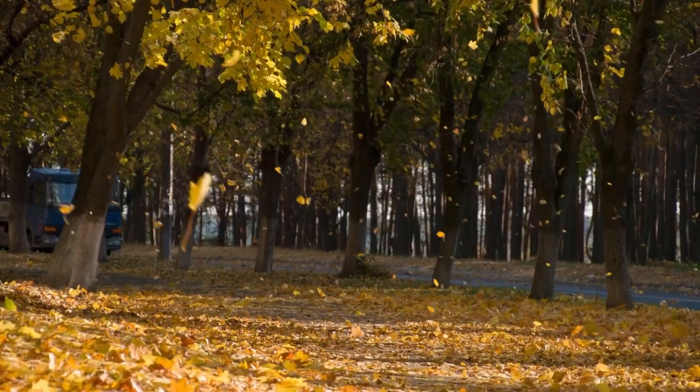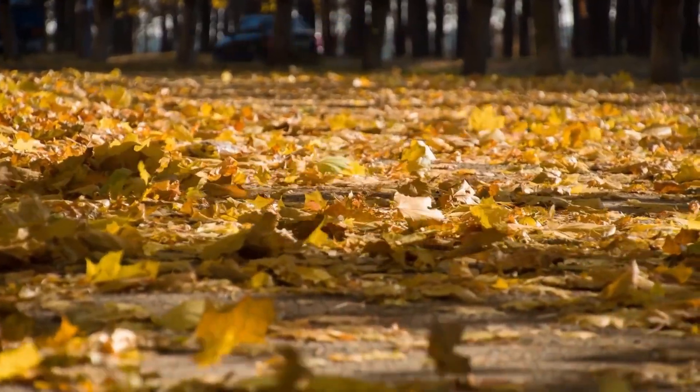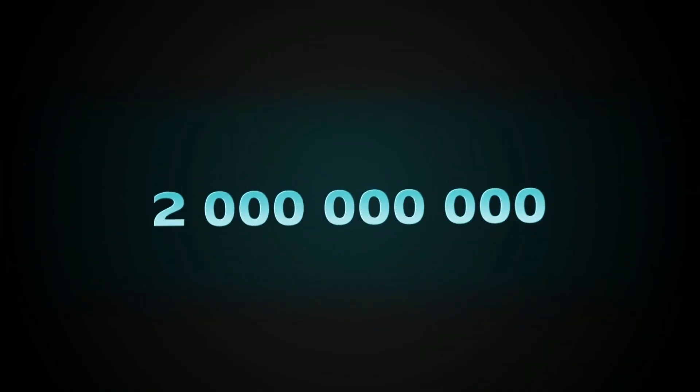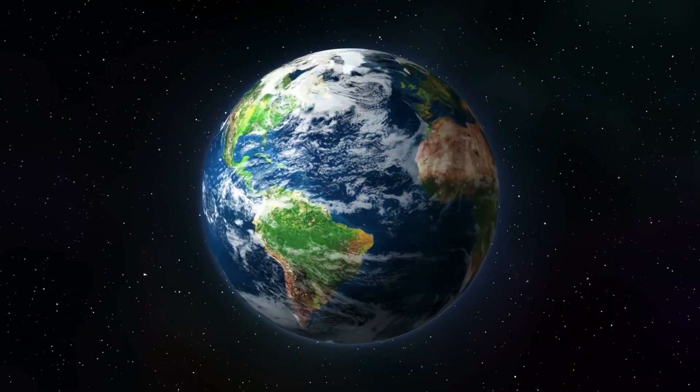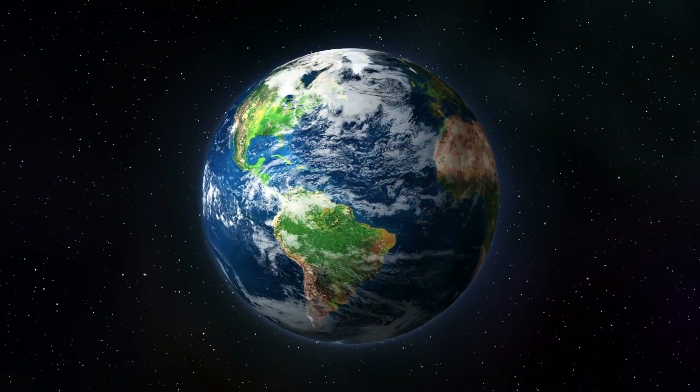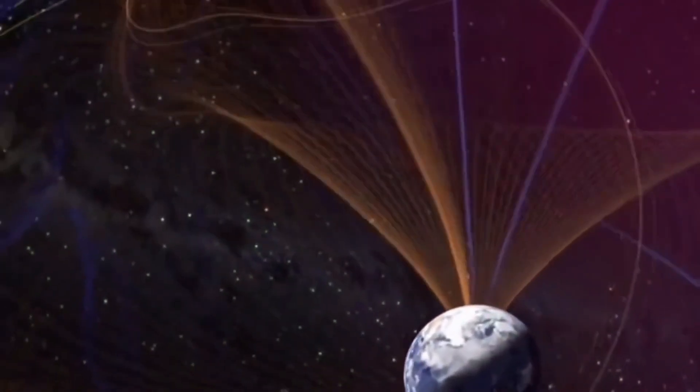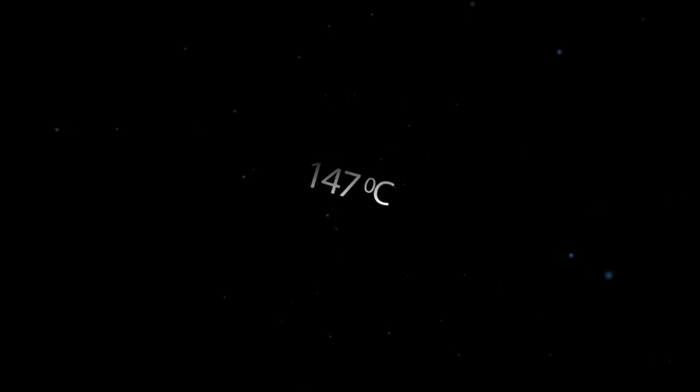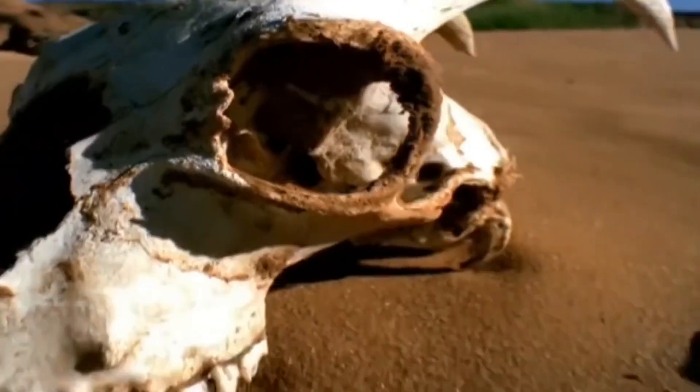800 million years from now, C4 photosynthesis is no longer possible, destroying all multicellular life. 2 billion years from now, the Earth's core freezes and the planet stops rotating. No rotation, no magnetic fields. No protection from the Sun, the surface temperature hits 147 degrees Celsius. All life dies.